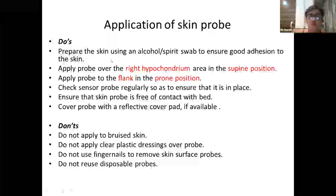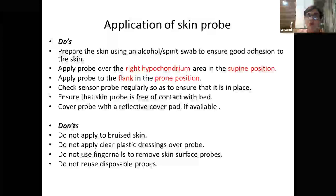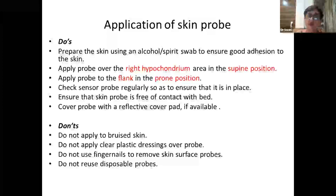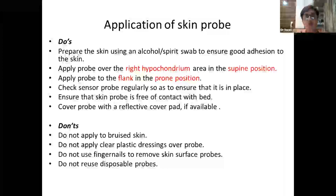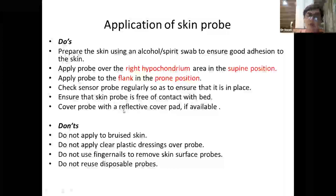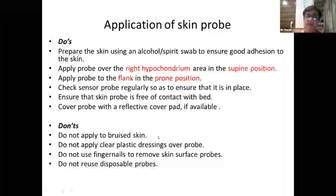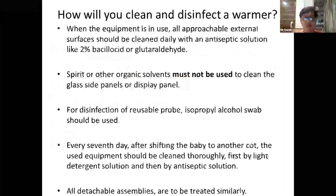For skin probe application: prepare the skin using an alcohol or spirit swab if there is vernix or the area is unclean. Apply the probe to the right hypochondrium in supine position and to the flank in prone position. Check the sensor regularly to ensure the metal surface is flat and in contact with skin. The probe must not contact the bed, and a reflective cover pad may be used. Do not apply to bruised skin or over clear plastic dressings, do not use fingernails to remove the probe, and do not reuse disposable probes.